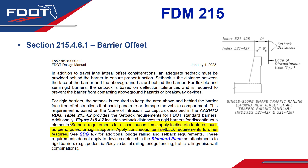The new language reads: setback requirements for discontinuous items apply to discrete features such as piers, poles, or sign supports. These are good examples of discontinuous items that have an approach face but are not long and continuous. The next part of the clarification reads: apply continuous item setback requirements to other features. So if it's not a discrete item such as a pier, pole, or sign support, you follow the continuous item setback requirement, as shown in Table 215.4.2 among other locations. The important thing is to clarify the difference between discontinuous and continuous items as they relate to setback distance requirements.